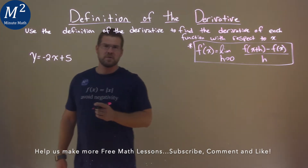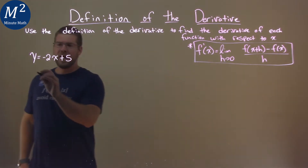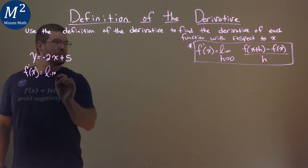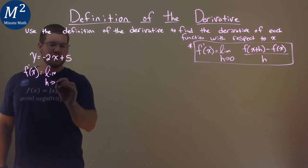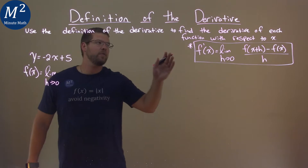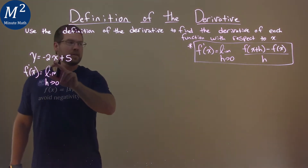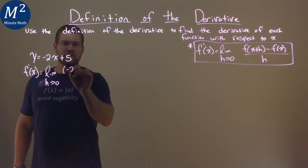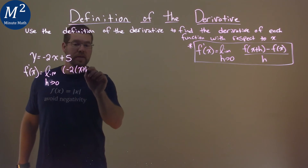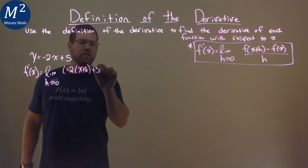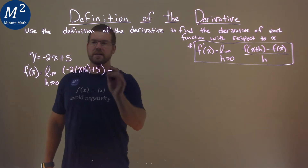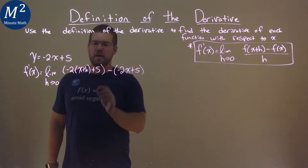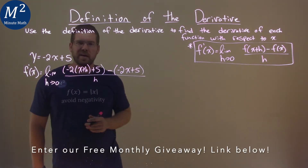We have that definition right here. So this is what we need to do. Our f prime of x is equal to the limit as h approaches 0 of — now we use our formula — f of x plus h. So wherever we see x in our function, we're going to put an x plus h in. So we have negative 2, and instead of the x, x plus h, and then we have a plus 5. Then we subtract our original function, negative 2x plus 5, and then we're going to divide that by h.